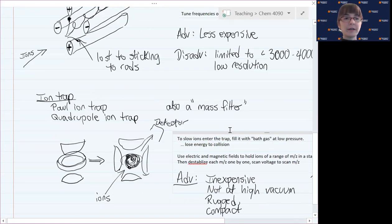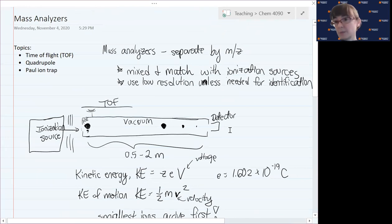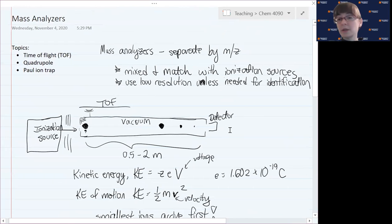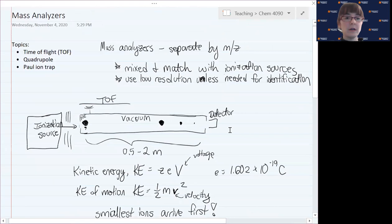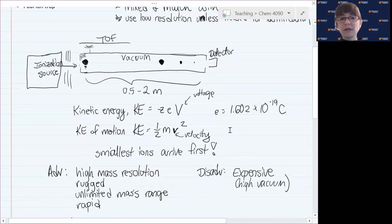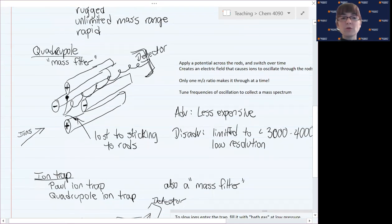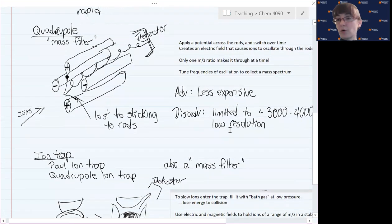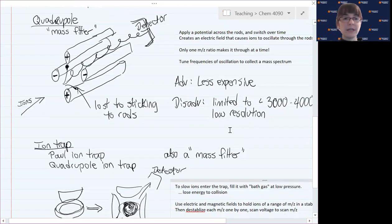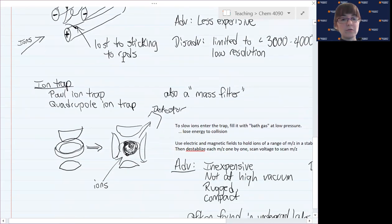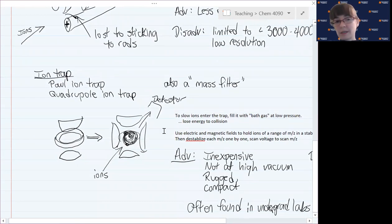From here, you are now familiar with three representative types of mass analyzers, certainly not the only types. You'll see others out there. But you've seen the time of flight where we separate by kinetic energy, the quadrupole, and the ion trap where we only let through one m over z at a time to the detector, either by stabilizing their path through a small gap between cylindrical rods, or by destabilizing them one by one. That's it for today. Thank you for listening.